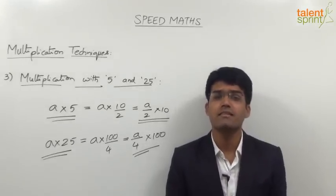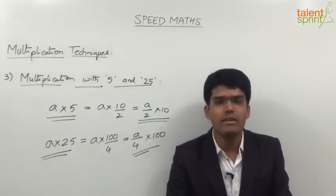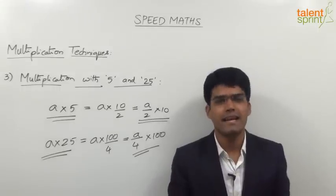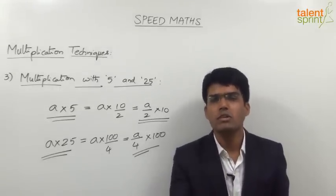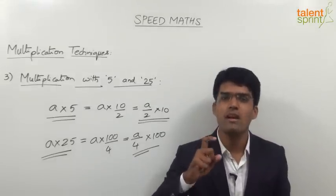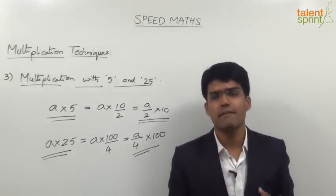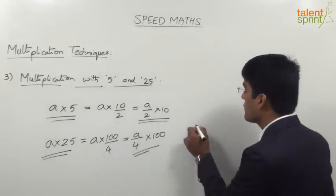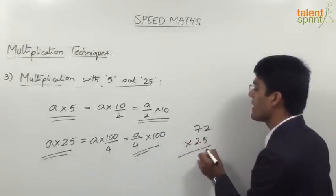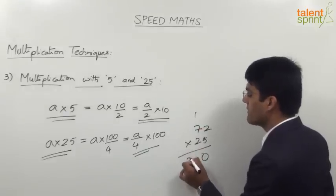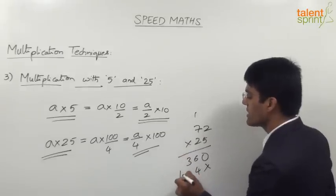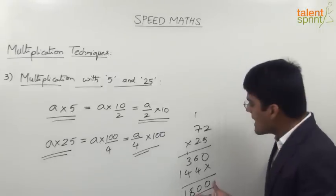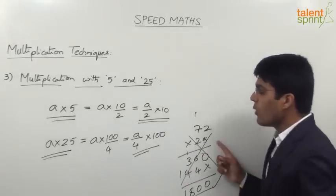64 into 25: the answer is 1600, because 64 by 4 is 16, into 100 is 1600. The second part — multiplication with 100 — doesn't take any time; it's just putting two zeros at the end. 72 into 25: since 72 by 4 is 18, the answer is directly 1800. Compare this with the regular method for 72 into 25, which requires multiple steps and becomes very lengthy. So the procedure here is clearly faster and more efficient.